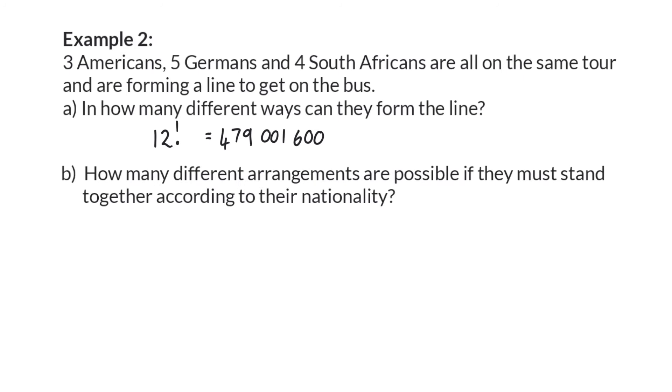Question B: How many different arrangements are possible if they must stand together according to their nationality? Because we have three different nationalities we are going to start off by grouping them and therefore there will be 3 factorial different ways of arranging the different nationalities.